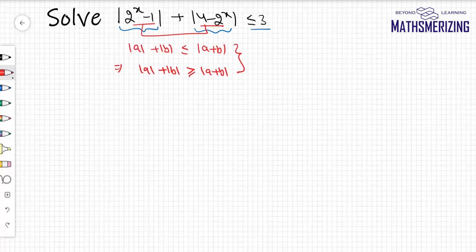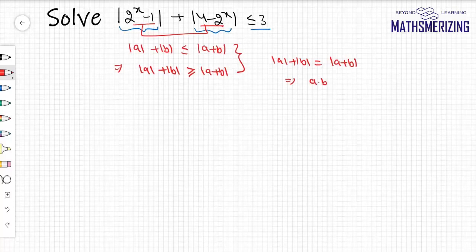So what we know is these two conditions can simultaneously be true only if |a| + |b| equals |a + b|, in which case the condition I'll get is a times b should be greater than or equal to 0.